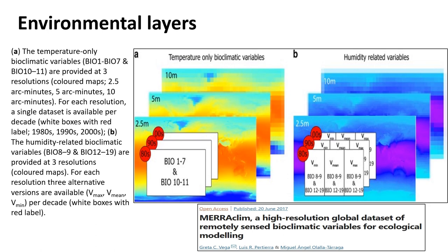And here is using different Bio-1 to Bio-7 and Bio-10 and Bio-11. And these are temperature variables. And the blue one is for humidity variables.